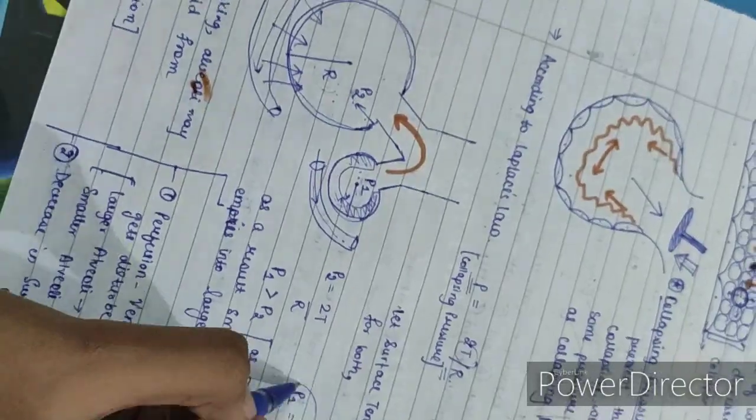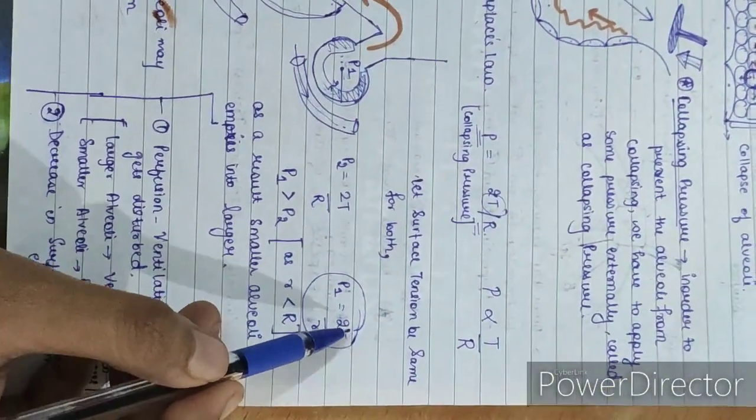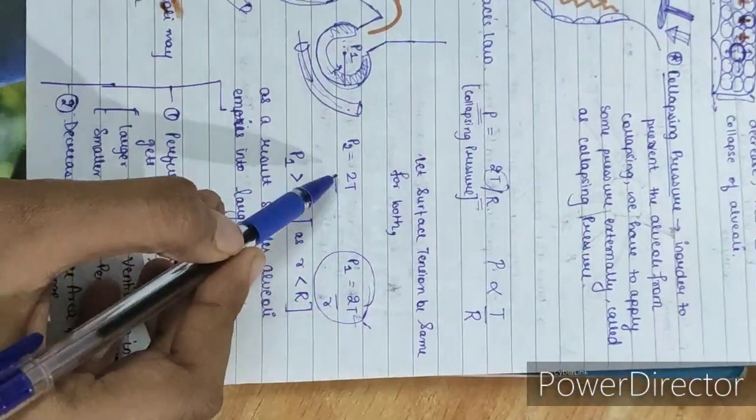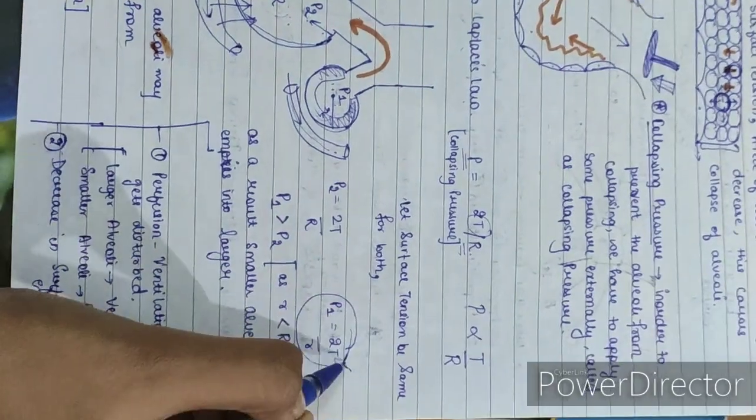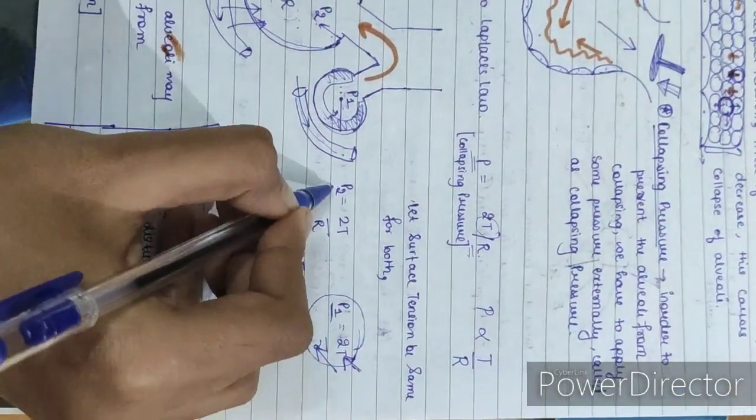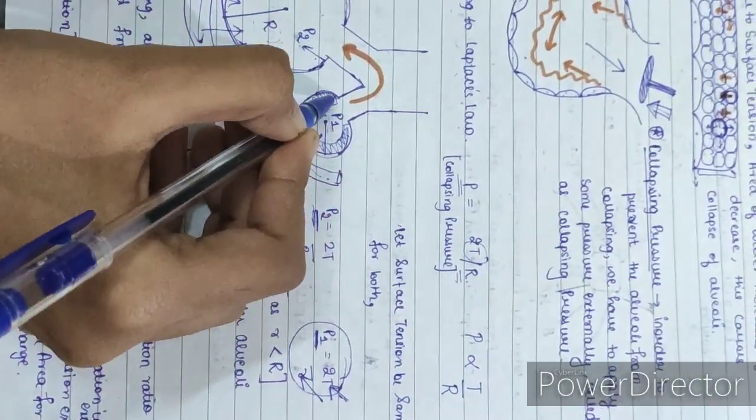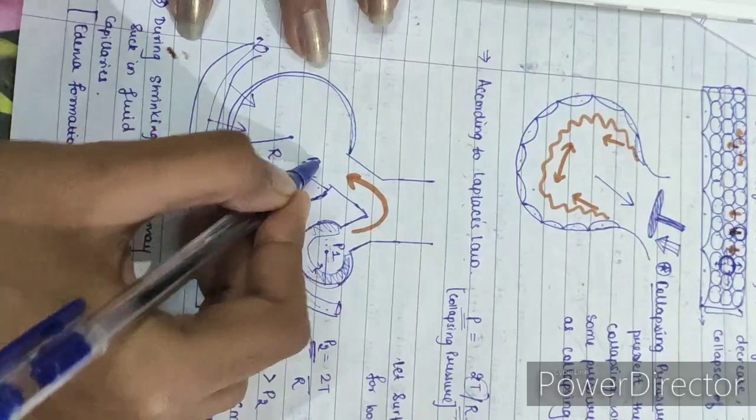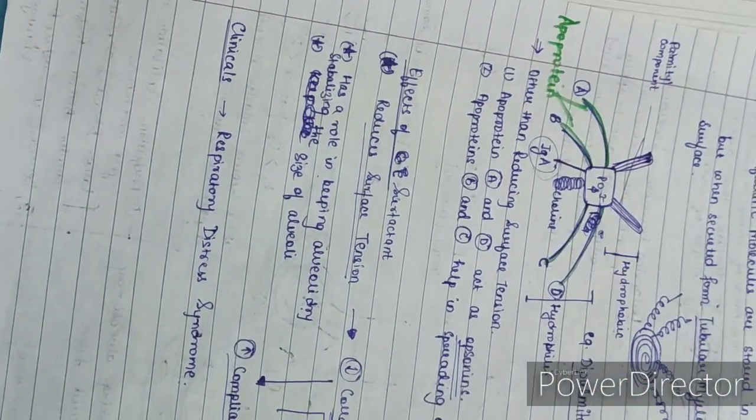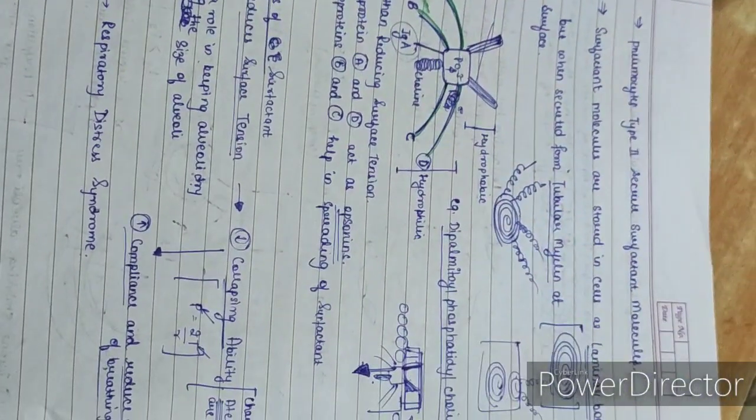So surface tension will be reduced. The radius was reduced before. The overall pressure is equal. Therefore, air does not flow from the smaller alveoli into the larger. As a result, smaller alveoli does not collapse. So that's why it helps in stabilizing the size of the alveoli.